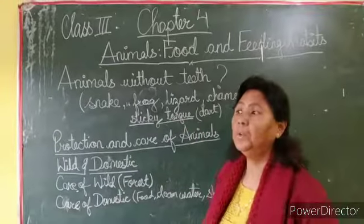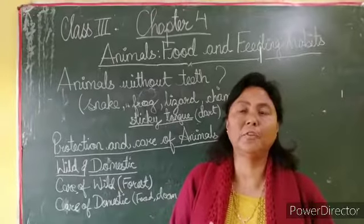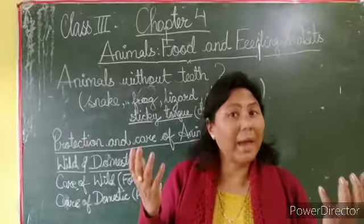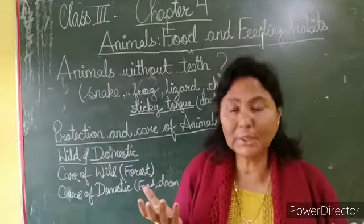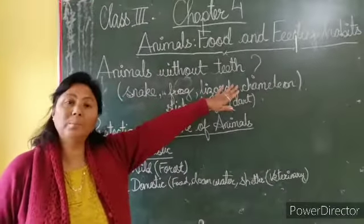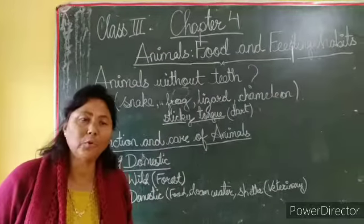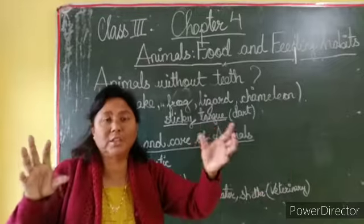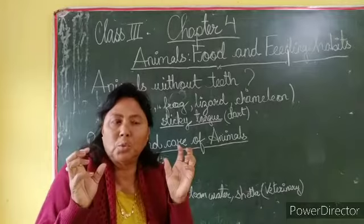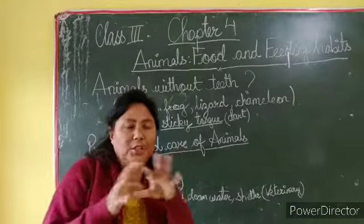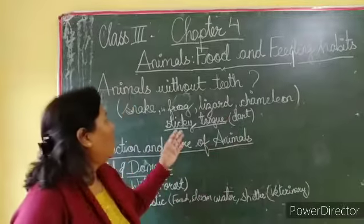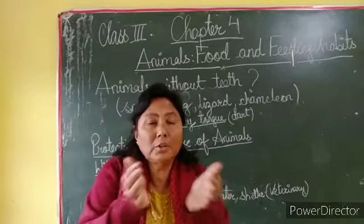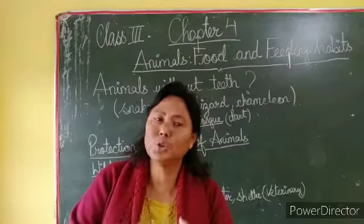Now, animals without teeth. Different animals have different ways of eating food. What about animals without teeth? Animals like snake, frog, lizard, and chameleon - chameleon is a kind of lizard that changes its colors as camouflage to protect itself from other animals, matching the color of trees or soil. These animals swallow their food whole. They swallow even small animals and even eggs without needing teeth.